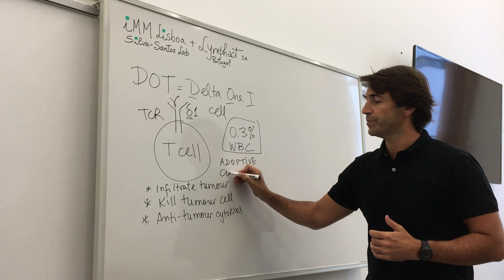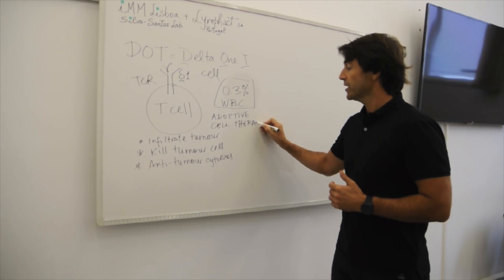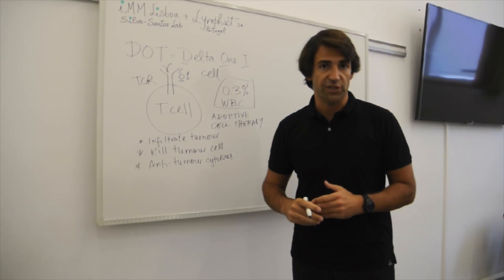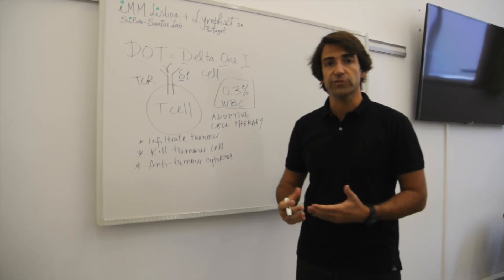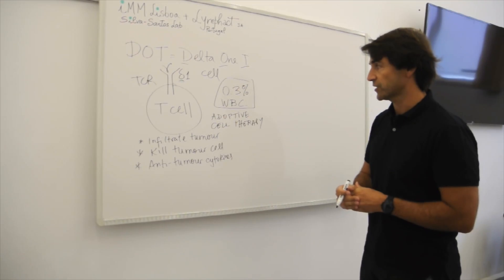So adoptive cell therapy is a major strategy to do immunotherapy, but you need billions of cells to reinject into the patient to exert their anti-tumor effector functions.